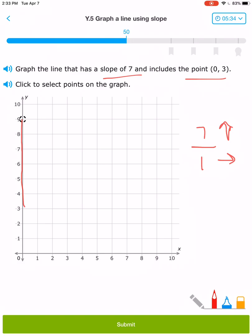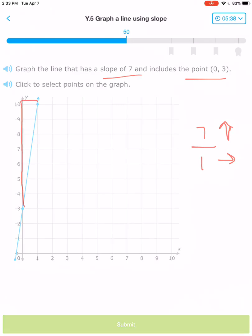So up 7: 1, 2, 3, 4, 5, 6, 7, over 1. So those are my two points. I can hit submit.